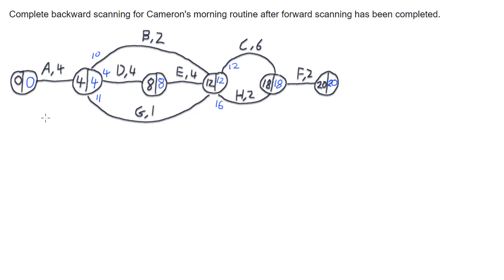I don't want to delay A because the project has started — what's the point of hanging around? So that's backwards scanning. It gives me the latest I can start A, the latest I can start the next three activities, the latest I can start E, the latest I can start the two after that, and the latest I can start F.